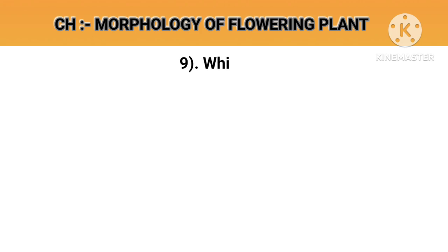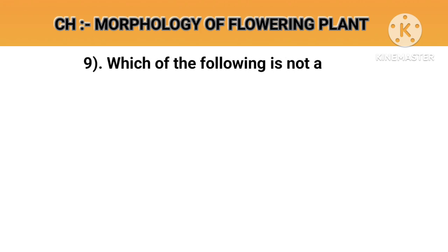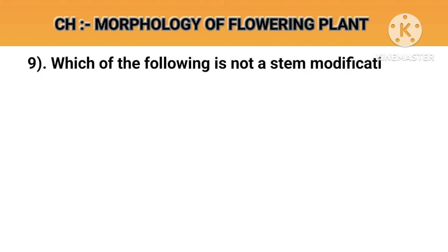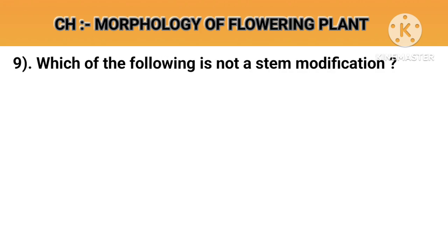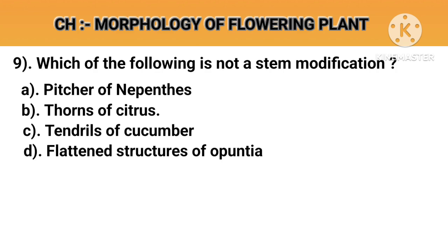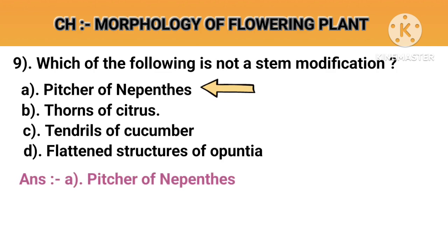Question number 9. Which of the following is not a stem modification. Option A: Pitcher of Nepenthes. Option B: Thorns of Citrus. Option C: Tendrils of cucumber. Option D: Flattened structure of Opuntia. Answer A: Pitcher of Nepenthes.